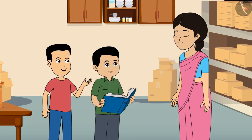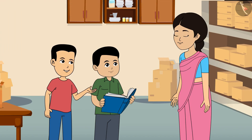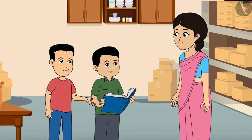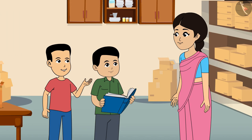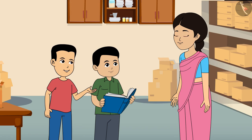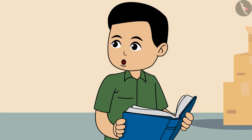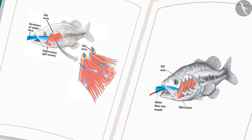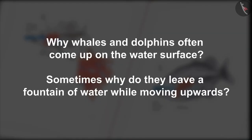Back home, Deepak reminds his mother about the cockroaches. He and Ramesh decide to read a book to learn how cockroaches breathe, and whether animals like cockroaches and frogs have lungs like humans. They also find information about fish. The book poses a question: why do whales and dolphins often come up to the water surface, and why do they release a fountain of water while moving upward?